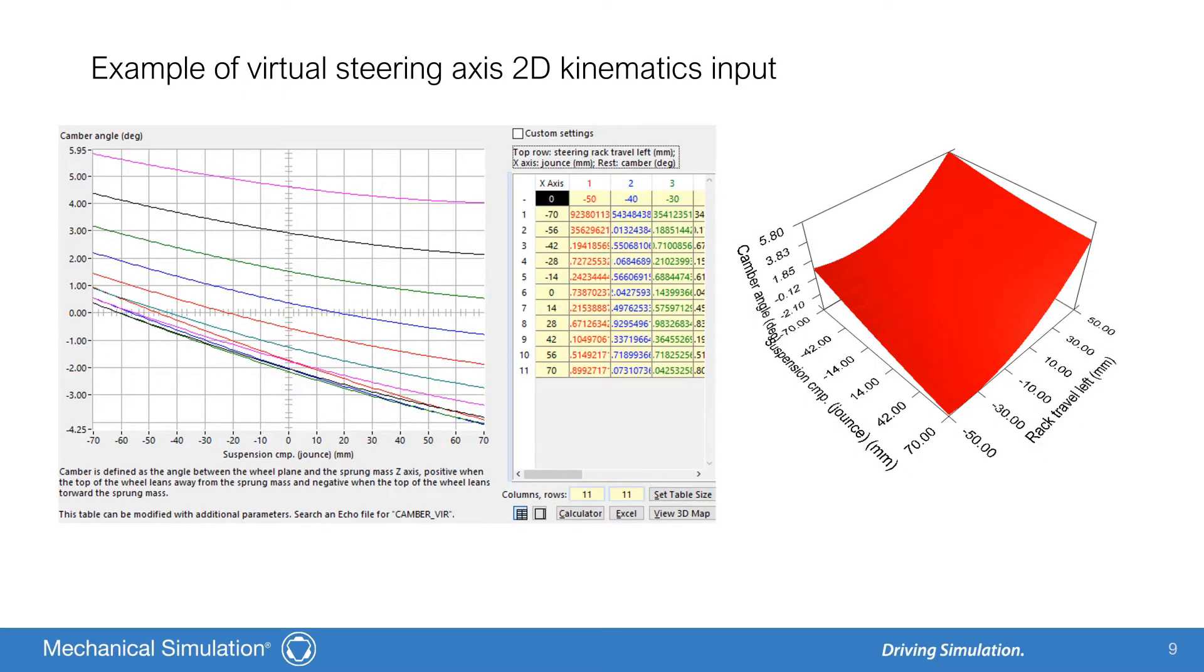The virtual steering axis wheel kinematics tables are 2D functions of jounce and steering rack travel. All five wheel kinematics variables—dive, camber, steer, wheel center x, and wheel center y—are defined as these 2D functions. This allows a rack movement to produce motion about an arbitrary, instantaneous, or virtual axis of rotation rather than a fixed kingpin axis.